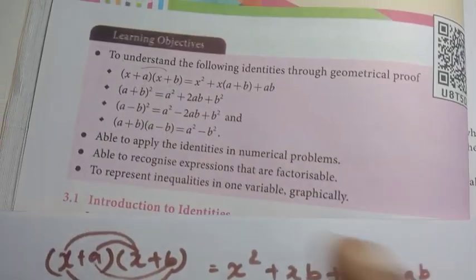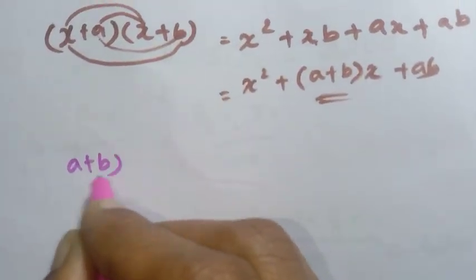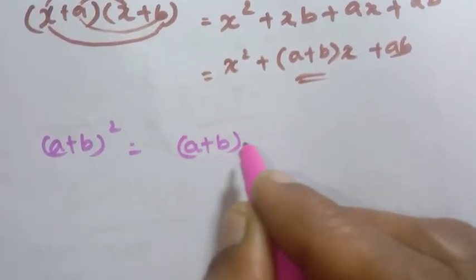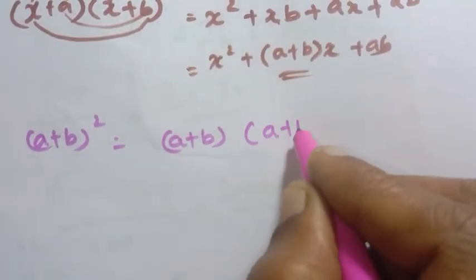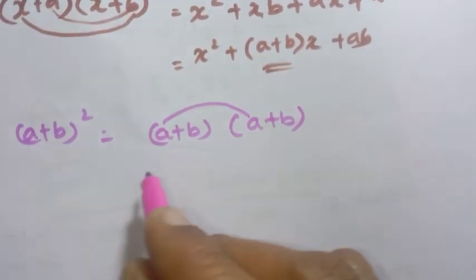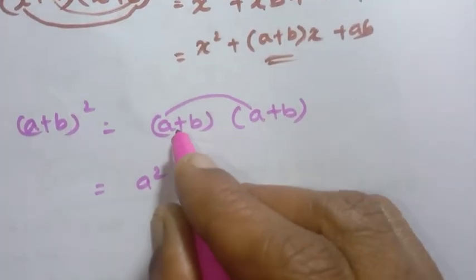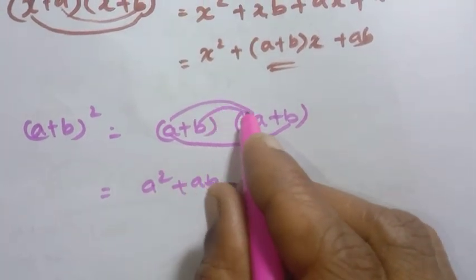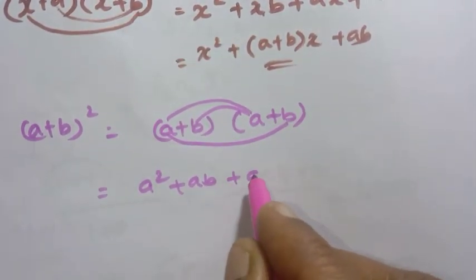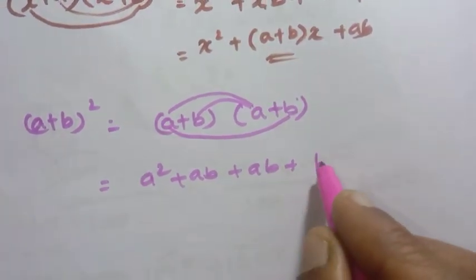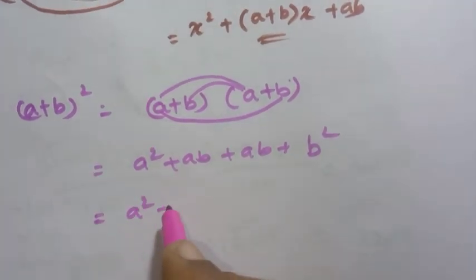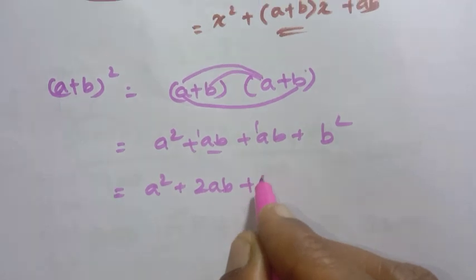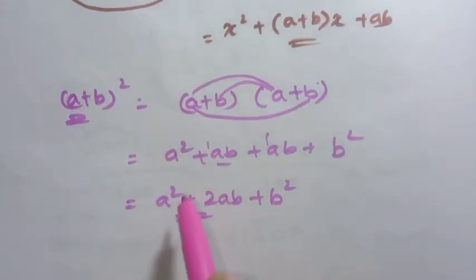Now for a plus b the whole square. We write it as a plus b into a plus b. Then: a into a is a squared, a into b is ab, b into a is ab, b into b is b squared. So we get a squared plus ab plus ab plus b squared, which is a squared plus 2ab plus b squared. That is the formula.